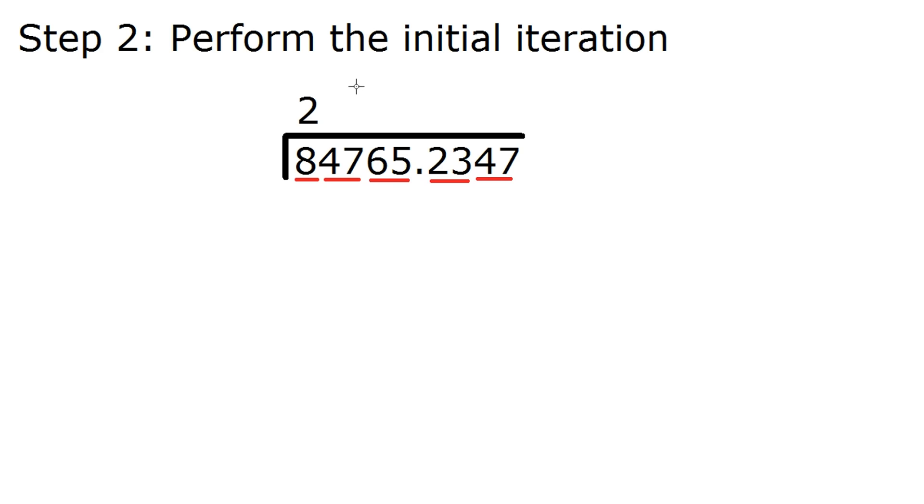Okay, so you're going to want to write a 2 up here. You're going to want to put a 2 on the side here as well, and then you're going to want to put the value of 2 squared under the first group. And just like long division, you're going to want to subtract this out. So that would give us a 4 here. And now here's the important part, that's probably the biggest difference between long division and taking square roots. Instead of dropping the next number down, you're going to drop the next group down. So here you would have a 4, and next to the 4, you're going to drop the next group here. So this would become 447.